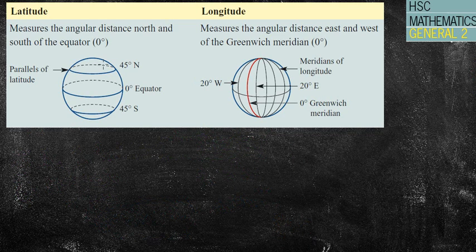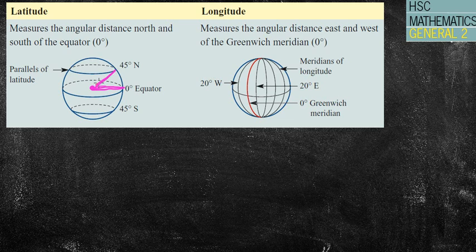Our lines of latitude measure the angular distance north and south of the equator. If the centre of the Earth is here, and I draw a line straight out to the equator, then draw a line up to the 45-degree north latitude line — that's a radius — the 45 degrees is the angle from the equator up to that line. Similarly, 45 degrees south is the angle from the equator down to that line.